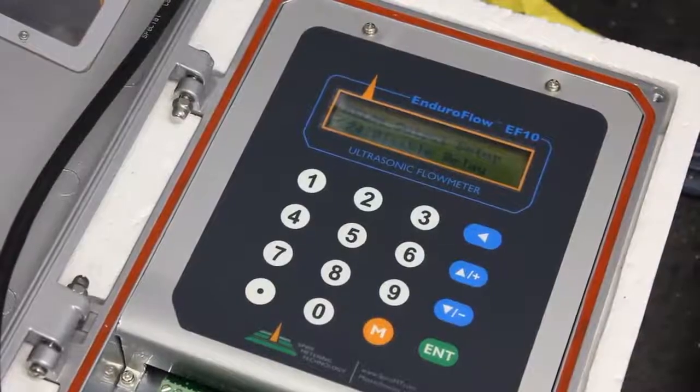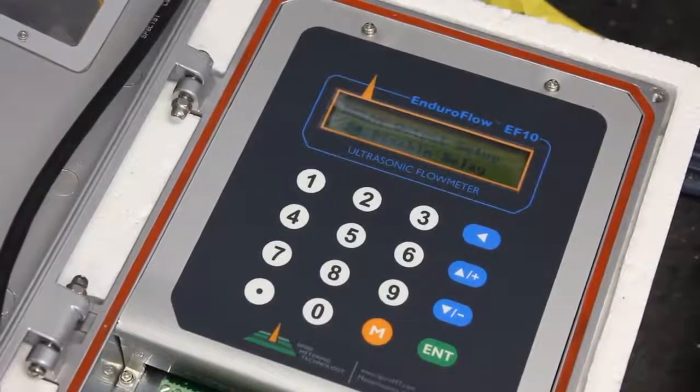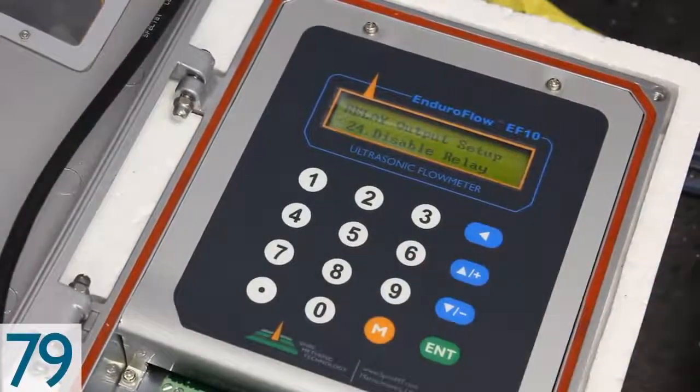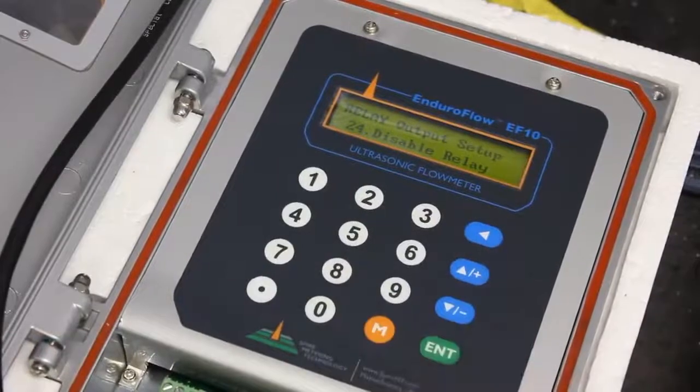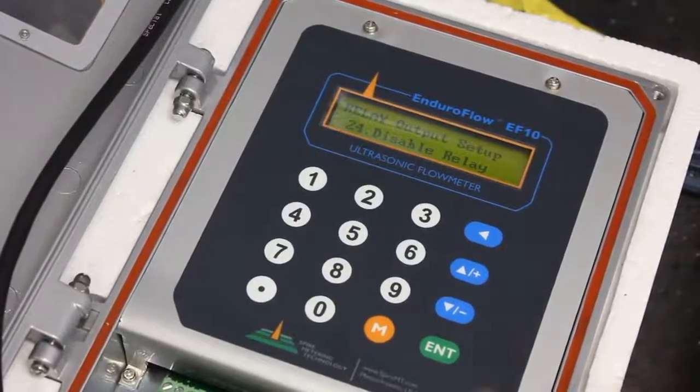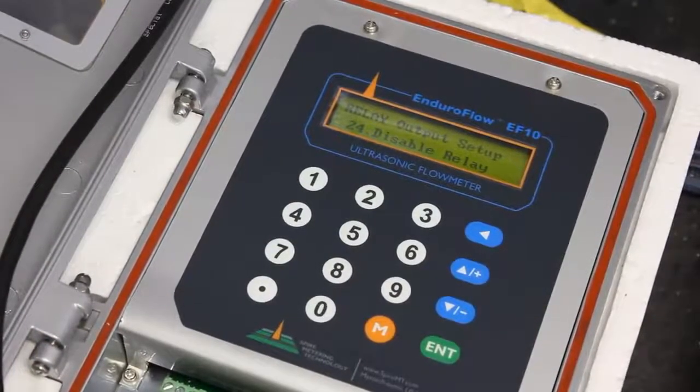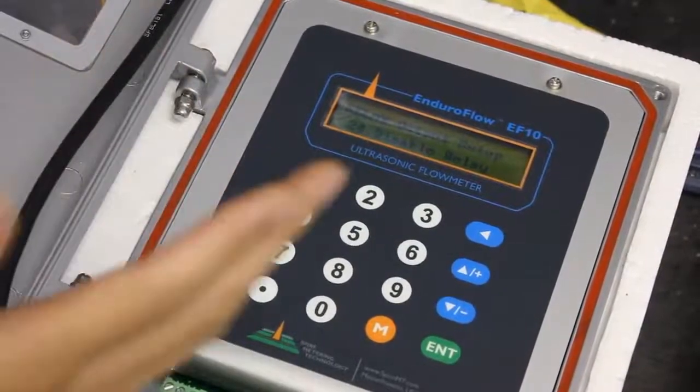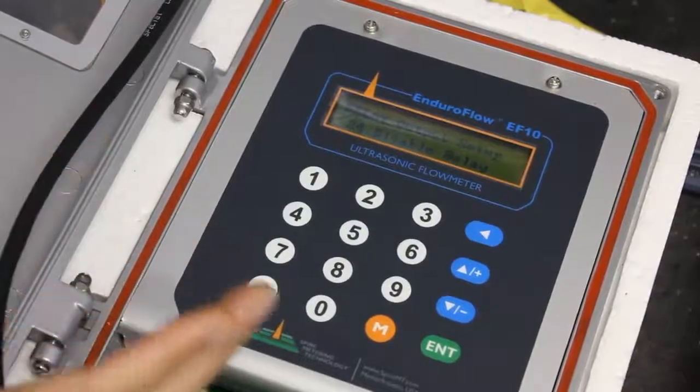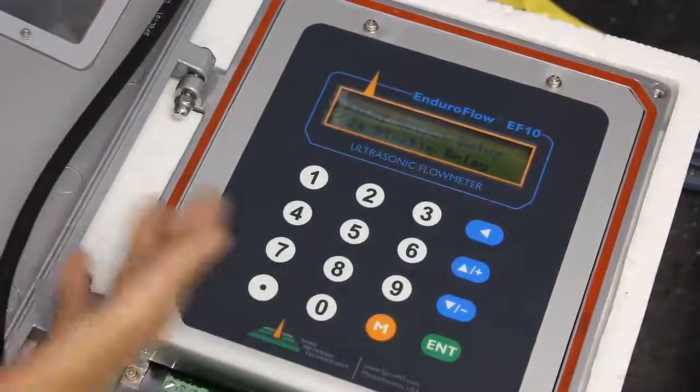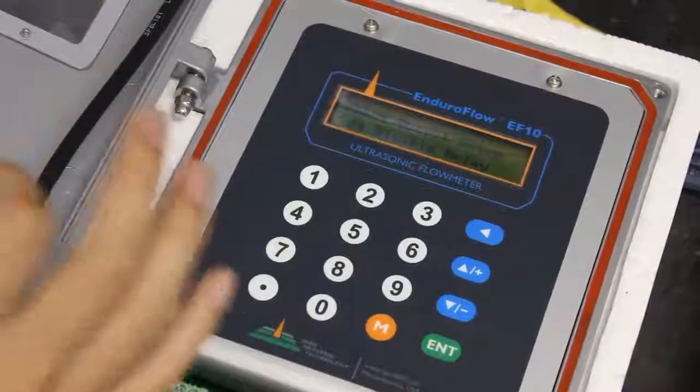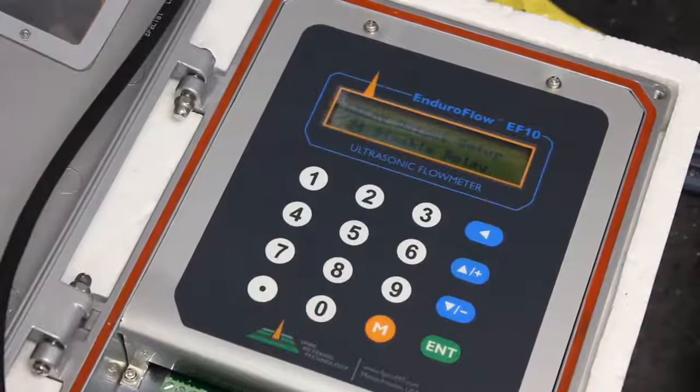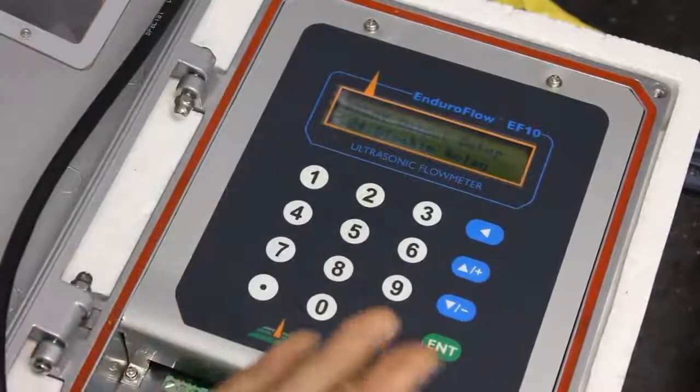Now we're going to talk about how to set up your relay output. Right now I'm on menu 79. Menu 79. Right now the relay is disabled. What the relay does is basically it records a certain amount of water, whatever unit or flow that goes through, whether you want it to be in gallons or cubic meters. And then after a certain constant amount there will be a click, so you know that that much has gone through.